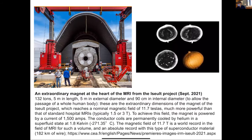The 11.7 T magnet in France is enormous — a person standing next to it gives you the sense of scale. The consortium came out of CERN engineers who had expertise with large accelerator magnets and turned it into an MRI project. The project started around 2005, making it a roughly 16-year project. Their first published images were of the inside of a pumpkin; they probably don't have human images yet and are still undergoing safety testing.